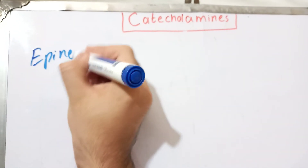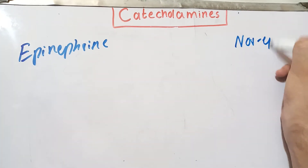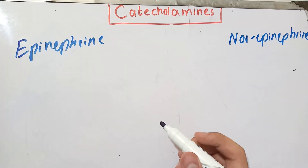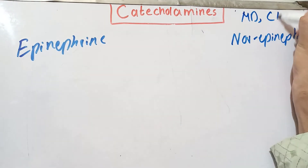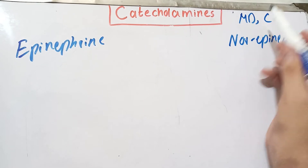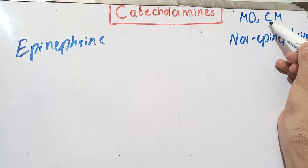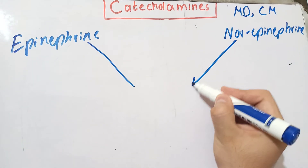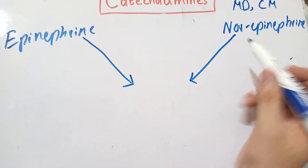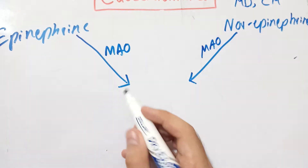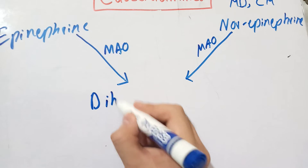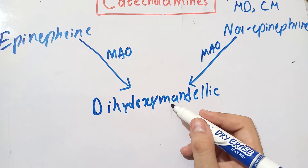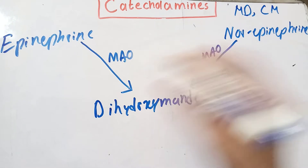Here we have epinephrine — remember that epinephrine is formed in the suprarenal medulla — and here we have norepinephrine. A useful mnemonic is MD and CM: the monoamine oxidase enzyme leads to a product starting with D, and the COMT enzyme leads to a product starting with M. Monoamine oxidase acts on both epinephrine and norepinephrine, converting both of them into a single compound called dihydroxymandelic acid.